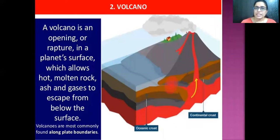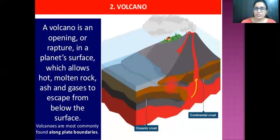The second endogenic feature is the volcano. A volcano is an opening or a rupture in the earth's surface that allows hot molten magma or ashes to escape from below the surface of the earth.